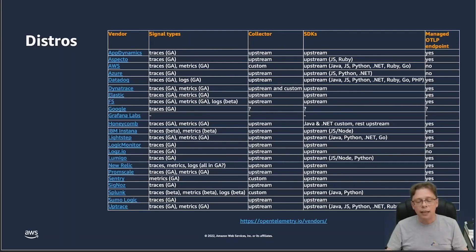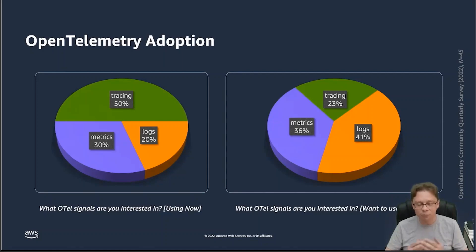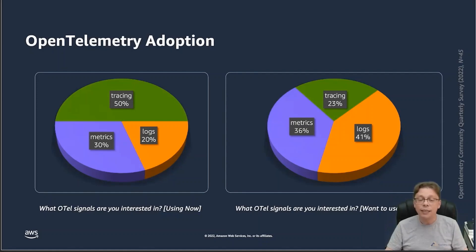Now let's look at adoption. I'll present two different survey data sets. The first is from the OpenTelemetry Community Quarterly Survey. Not very surprisingly, given where we are with adoption — traces went GA in 2021, metrics are going GA as we speak, and logs will be going GA in 2023 — it's not too surprising that currently half of the people who responded said they're using it for tracing, and roughly a third for metrics.